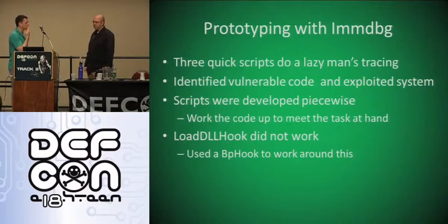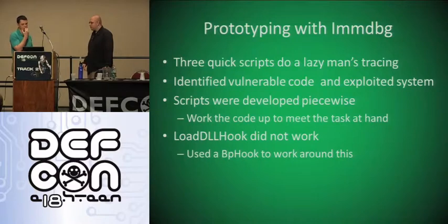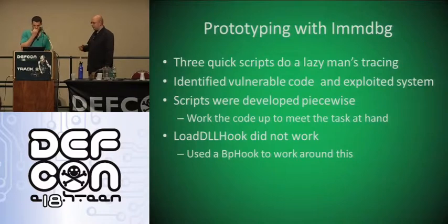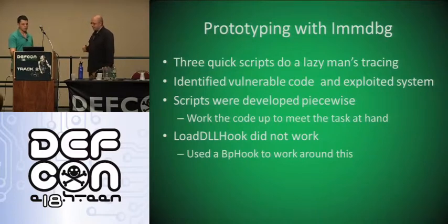Immunity Debugger is basically OllyDbg with Python built in and a nice API. It's three quick scripts to do some lazy-man tracing. I identified the vulnerable code, knew the crash was happening, and wanted to develop scripts to figure out exactly where the taint happened and work backwards. The initial approach was to use loaddllhook, an API made available by Immunity Debugger, but it didn't work. I had to use bphook instead, spending hours trying to make it work.